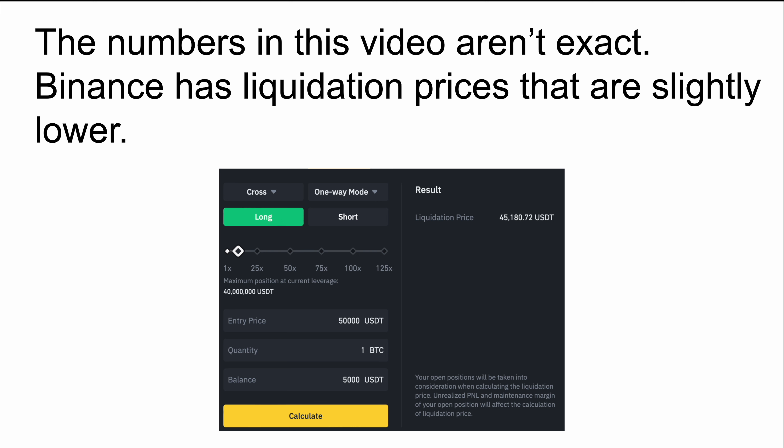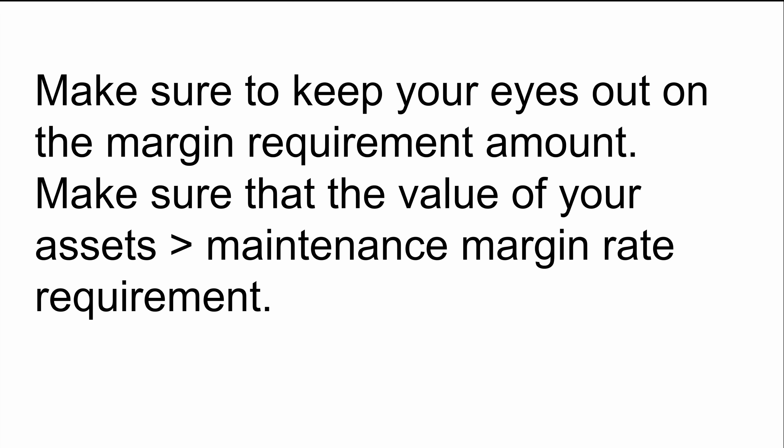So just keep in mind that these numbers aren't exact, but should give you a general idea of how liquidations work when trading futures. Basically, what you'll want to do is make sure that you keep your eyes on the margin requirement amount. You'll want to make sure that the value of your assets are much greater than the margin maintenance rate requirement. You'll want to double check with whichever exchange you're using to trade futures on to ensure that you meet their margin maintenance percentage or amount — otherwise, you're going to get liquidated.